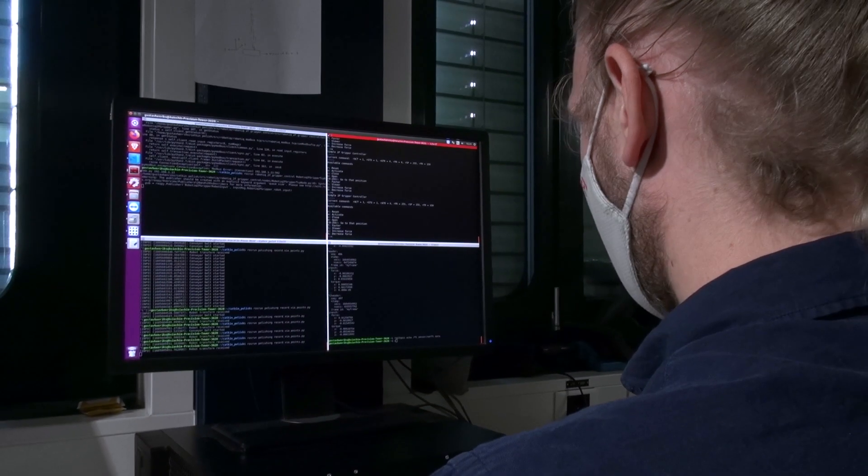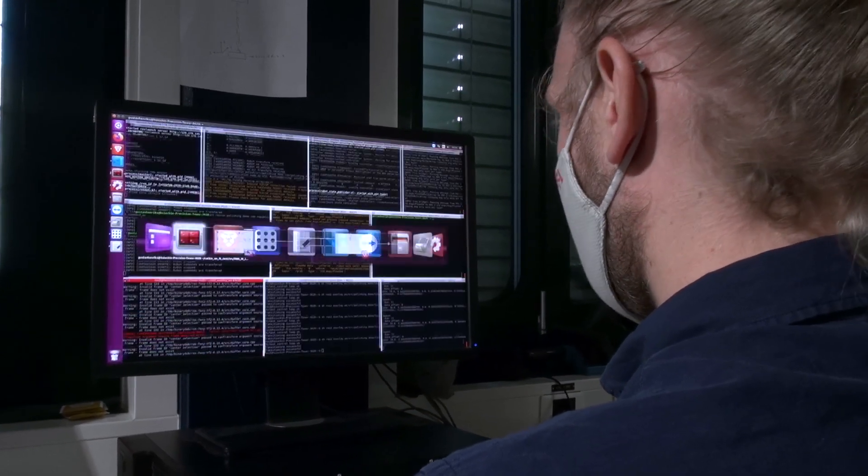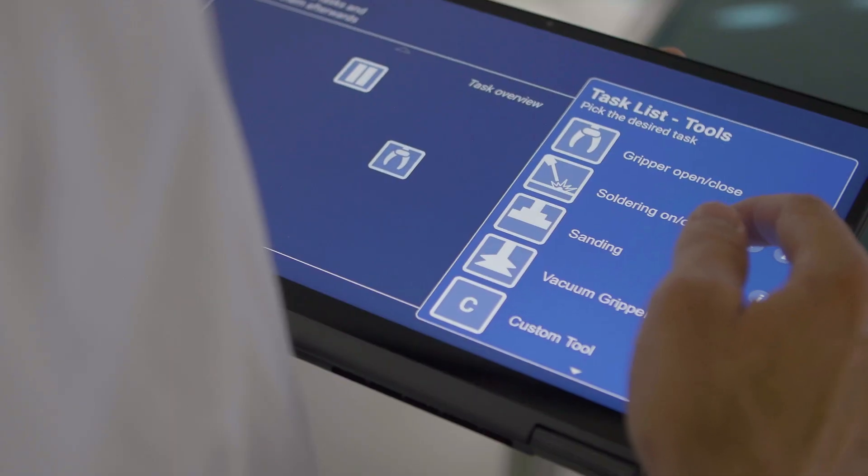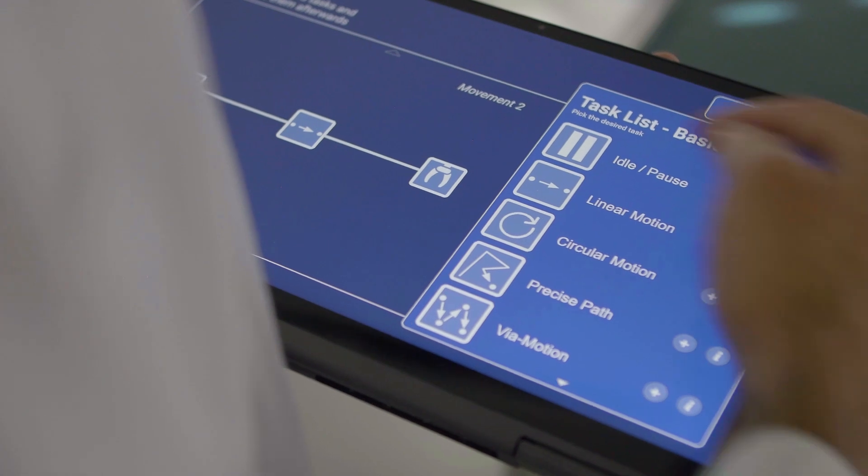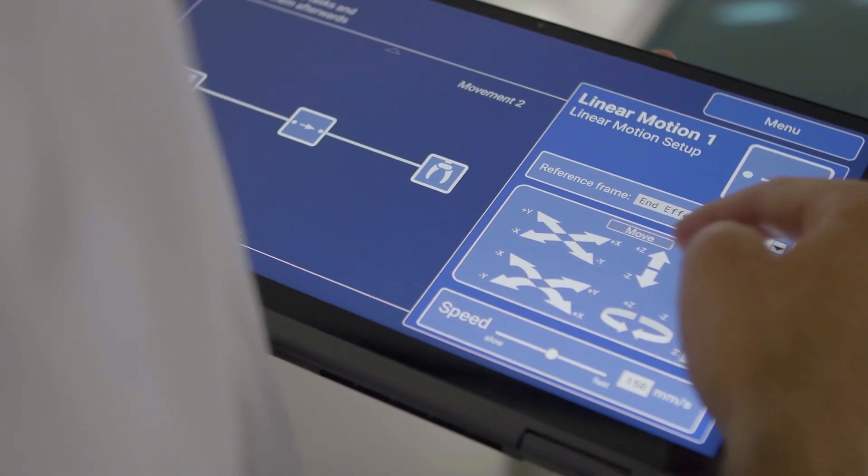What we provide them is software and a set of tools to simplify this programming. Basically, they have access to a set of modules that they can assemble together visually to create their applications. It's faster, easier, and a more standardized way of programming robots.